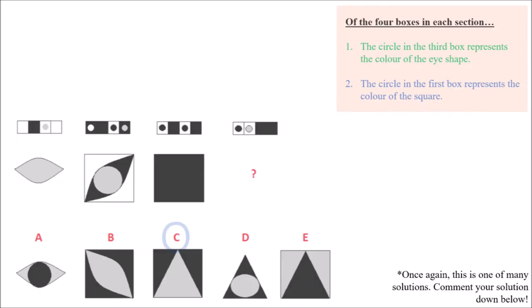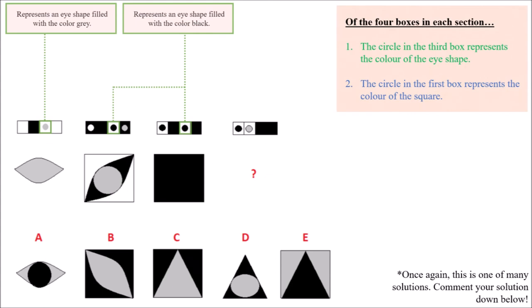The answer to the fourth question is option C. To solve the fourth question, you must be able to identify the relationship between the bars at the top of the problem and the shapes which are directly below them. Let's begin by considering the first item in the series. The third section of the first bar contains a gray circle which indicates the color of the eye-shaped figure directly below it. The second item also contains an eye-shaped figure which is colored black. This corresponds to the black circle which can be found in the third section of the second bar.